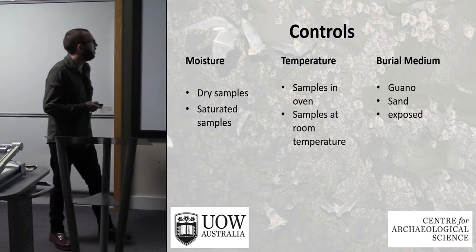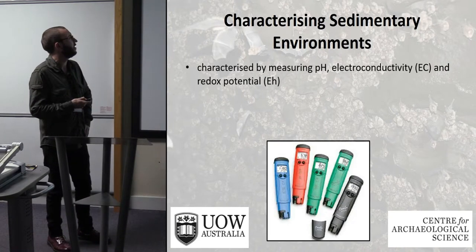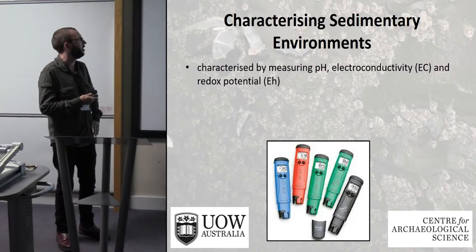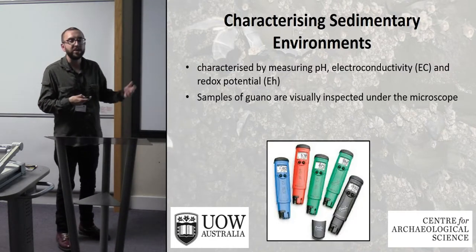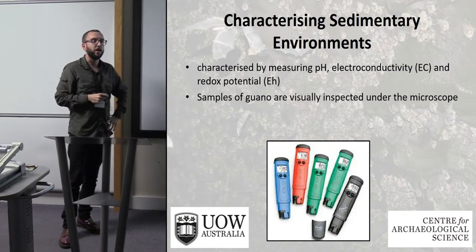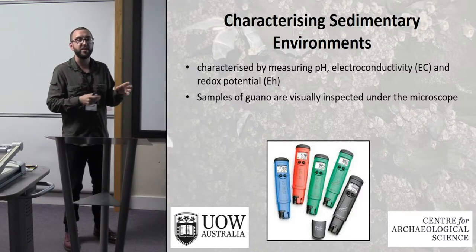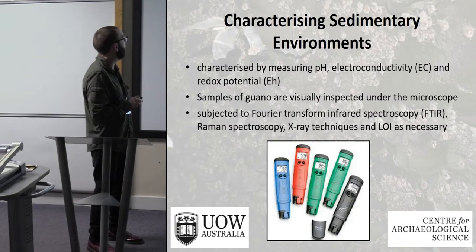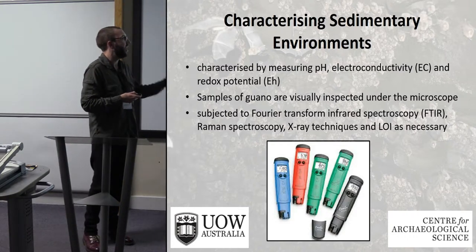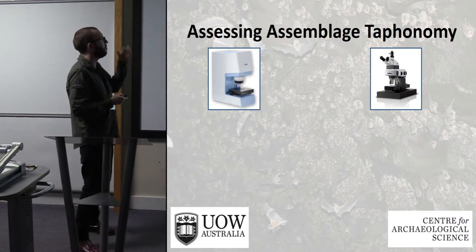As these are excavated one per month, we look at the sedimentary environment — variables typical in soil science like pH, electroconductivity, redox potential, and visual inspection under the microscope. The two columns of archaeological analogues are arranged so that one half can be excavated and the other half dried and made into a thin section for further analyses. We use a combination of Fourier transform infrared spectroscopy, Raman spectroscopy, X-ray techniques, and loss on ignition.